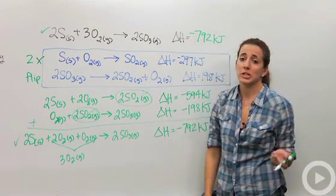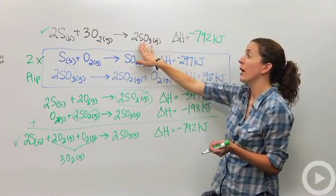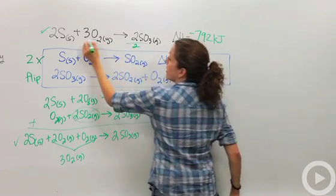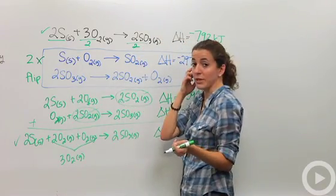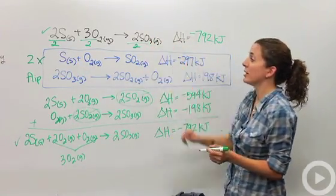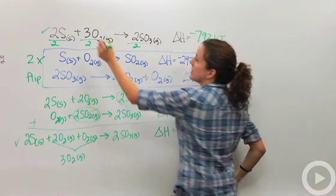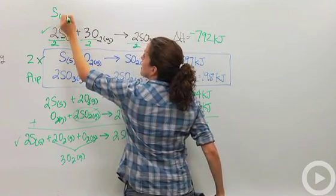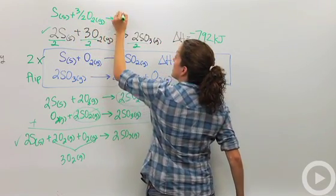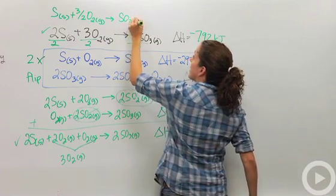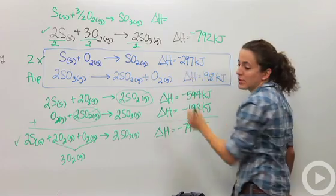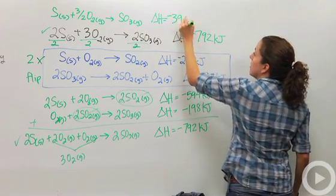So in order to do formation reactions, the best way is we want to get this to be one mole. So I'm going to divide the whole thing by two because in formation reactions—if you want to learn more about them, there's a video on that as well—formation reactions have one mole of the product. So we're dividing everything by two, which ends up with sulfur solid plus three halves oxygen gas yields sulfur trioxide gas. And then my delta H is also going to be divided by two, which is going to be negative 396 kilojoules.